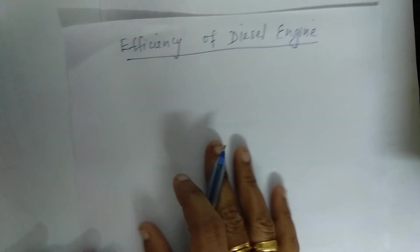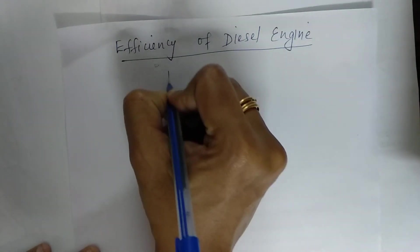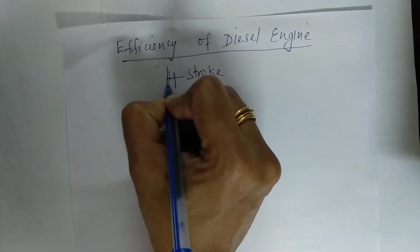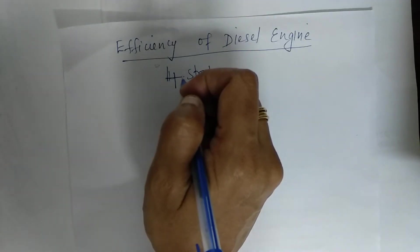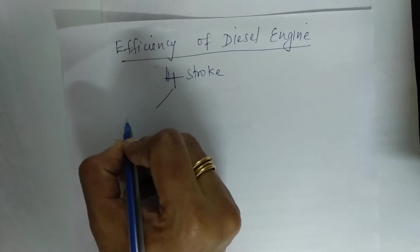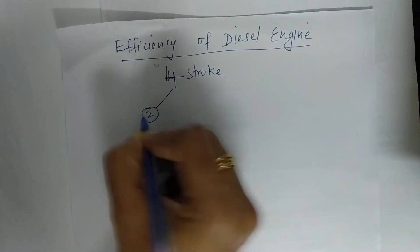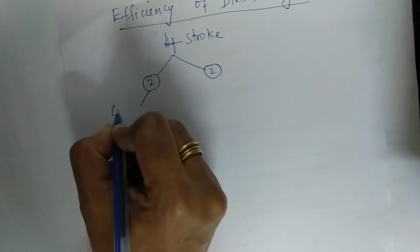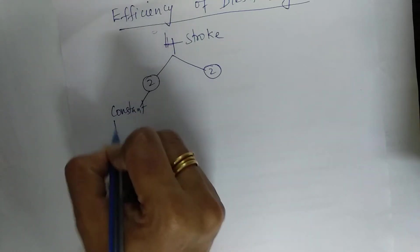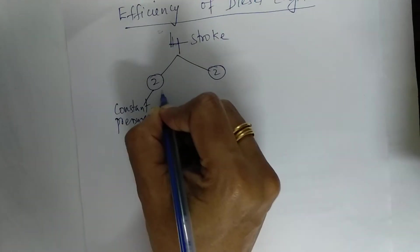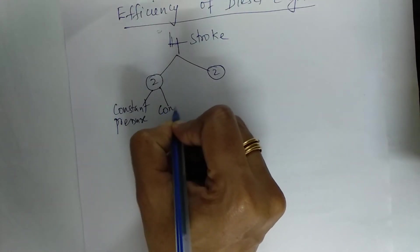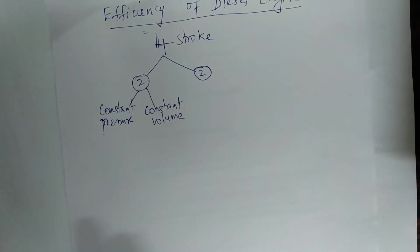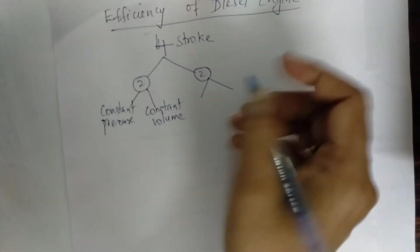This is a four-stroke engine. The heat addition process takes place at constant pressure, and another process takes place at constant volume. There are also two isentropic processes.